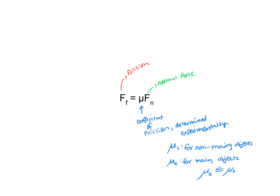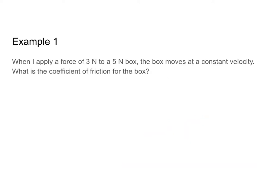We can find the coefficient of static friction for an object by looking at the applied force needed to make it move. That applied force will be equal to the force of friction on that object, and we can plug that into our ff equals mu times the normal force equation to figure out our coefficient of static friction. With that, let's go ahead and look at an example problem.